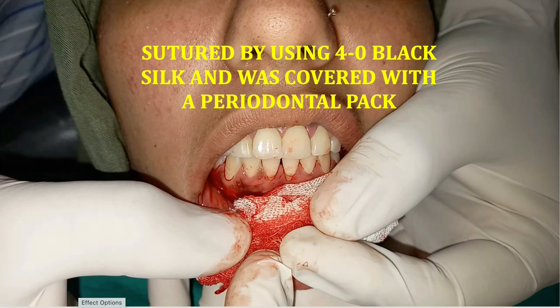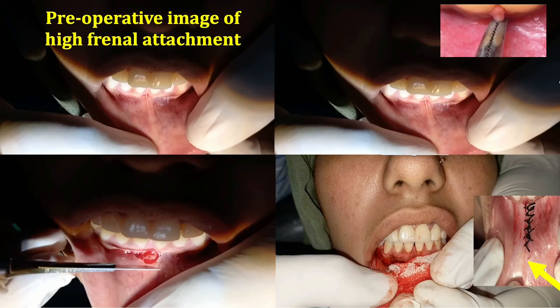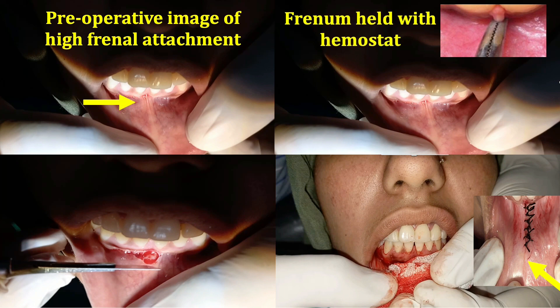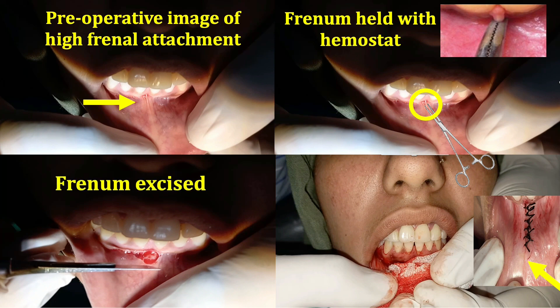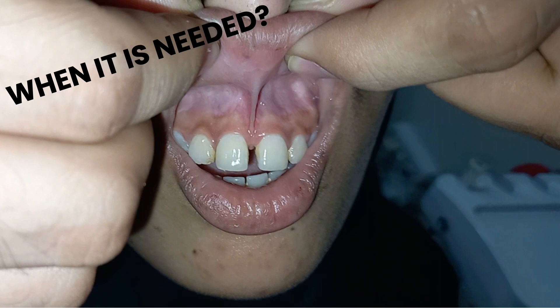The pack and suture are removed one week postoperatively. Here is an overview of the complete frenectomy. This is a pre-operative image of the high frenum attachment. We hold the frenum with the artery forceps, cut the triangular area with the scalpel blade, and after excision a diamond-shaped wound is left. We then suture that area, place the pack, and after one week we remove the suture.